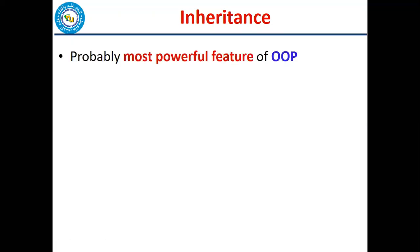Inheritance is the most powerful feature of OOP. If you look at OOP in general, OOP has three pillars. The first is encapsulation. In today's lecture, we have covered encapsulation. Encapsulation means that we have identified different data members. First of all, we identified classes and designed our system so that we defined everything in terms of objects and classes.